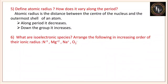What are isoelectronic species? Arrange N³⁻, O²⁻, Na⁺, and Mg²⁺ in increasing order of ionic radius. Isoelectronic species are those having an equal number of electrons. As positive charge increases, size decreases because the atom loses electrons and the outermost shell is eliminated. So the increasing order of ionic radius is: Mg²⁺ < Na⁺ < O²⁻ < N³⁻.